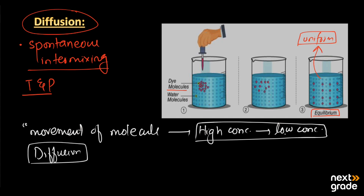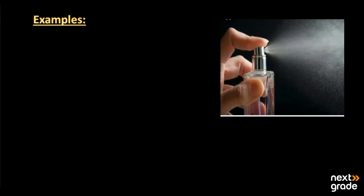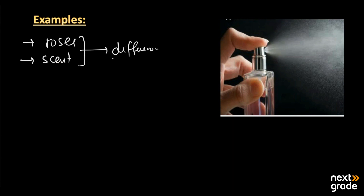An example of diffusion from daily life is the spreading of the fragrance of roses or a scent. When we spray perfume in one corner of a room, after some time it spreads out all around the whole room. This is a simple example of diffusion.